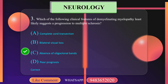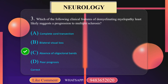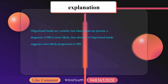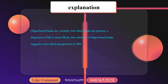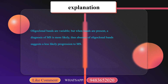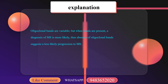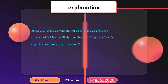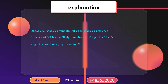Absence of oligoclonal bands. Oligoclonal bands are variable, but when bands are present a diagnosis of multiple sclerosis is more likely. Thus, absence of oligoclonal bands suggests a less likely progression to multiple sclerosis.